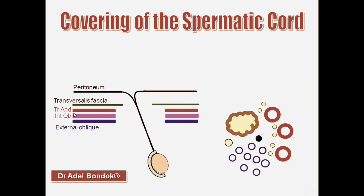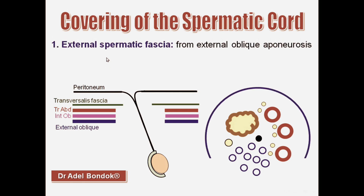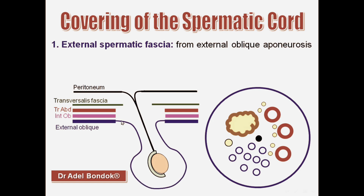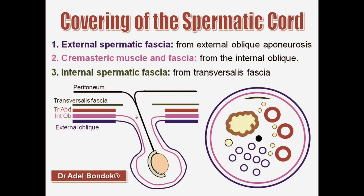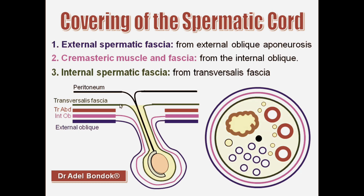So again, the covering of the spermatic cord: these are the muscles of the anterior abdominal wall — external oblique, internal oblique, transversus abdominis — and it is lined by transversalis fascia. The three layers covering the spermatic cord are: the outer layer, external spermatic fascia, from the external oblique aponeurosis; the middle layer, cremastric muscle and fascia, from the internal oblique muscle; and the inner layer, internal spermatic fascia, from the transversalis fascia.